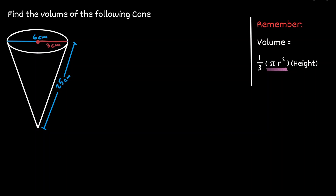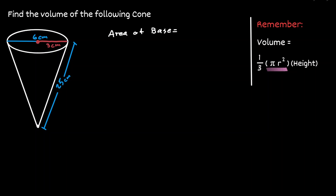So now we can find the area of the base, which is equivalent to π times three squared, which is 9π centimeters squared. What we need to figure out now is the height of this cone.